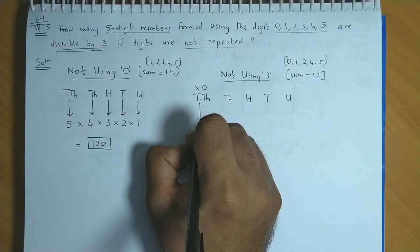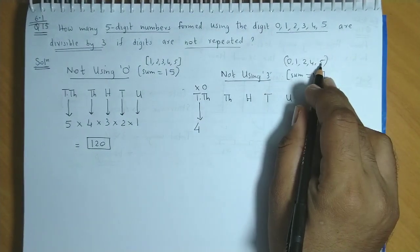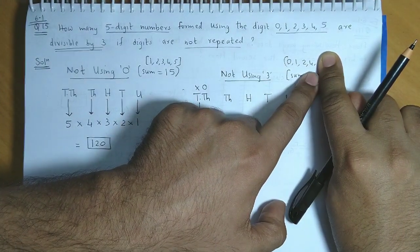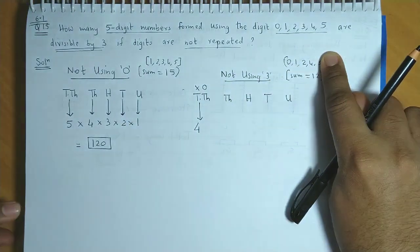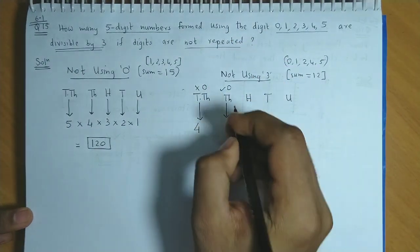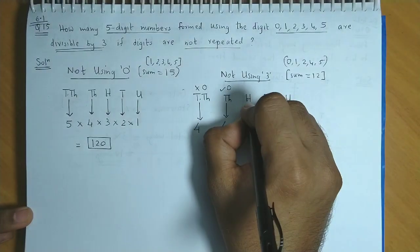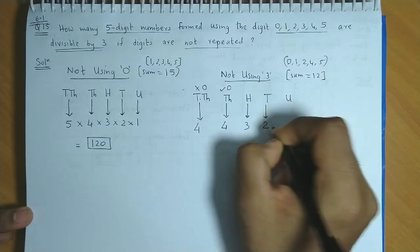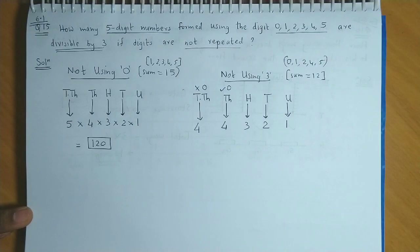Ten thousands place could be arranged in 4 ways. From 1, 2, 4, and 5, one will be used, say 5 goes away. We're left with 1, 2, and 4. But we haven't used 0 yet. We can include 0 back here. So if we include 0, the thousands place can be arranged in 4 ways. One number will be used, then hundreds will be 3 ways, tens will be 2 ways, and the last number will be in the units place, so 1 way.